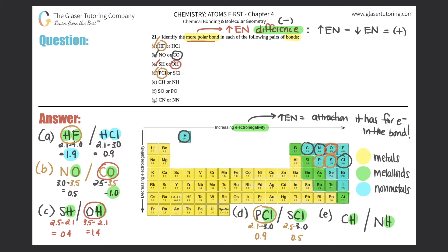For part e, CH versus NH. Hydrogen is the same for both at 2.1. Carbon is 2.5 and nitrogen is 3.0. For CH: 2.5 minus 2.1 gives an electronegativity difference of 0.4. For NH: 3.0 minus 2.1 gives 0.9. Since 0.9 is larger, NH is the more polar bond — that's the answer for e.